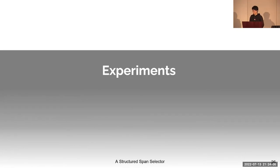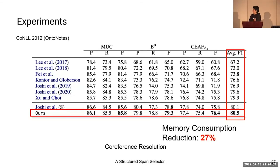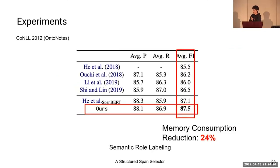We will now show experimental results on coreference resolution and semantic role labeling. We did experiments on the CoNLL 2012 dataset, also known as OntoNotes. We evaluated our model on coreference resolution and see consistent gains with a significant reduction in memory consumption. We also evaluated on the CoNLL 2012 semantic role labeling task and again observed consistent gains over the greedy baseline model, as well as significant memory reduction.